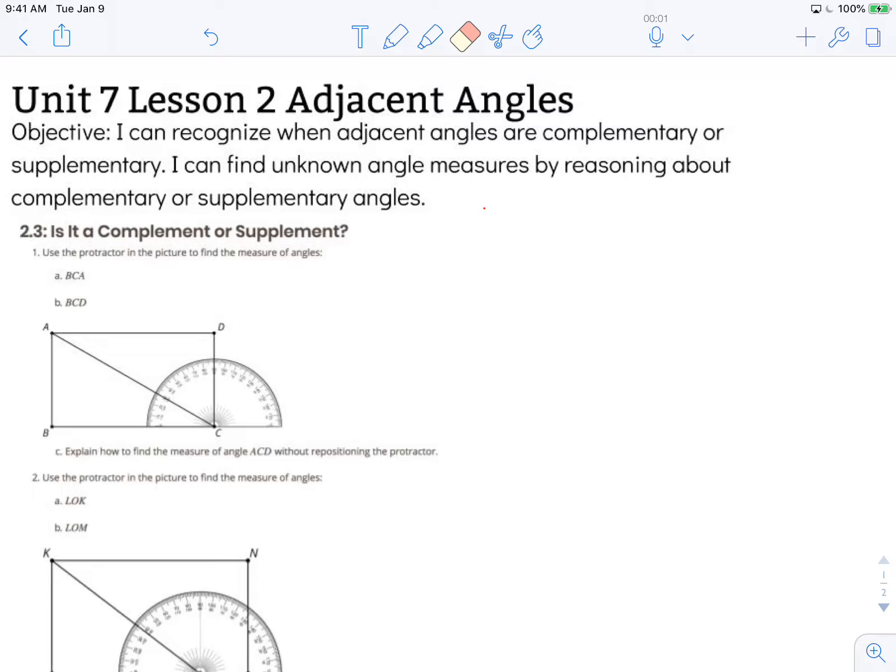Our objective states: I can recognize when adjacent angles are complementary or supplementary. I can find unknown angle measures by reasoning about complementary or supplementary angles.